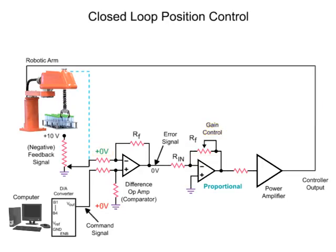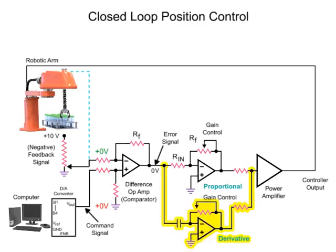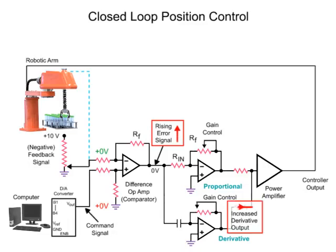To achieve a fast response time and minimize overshoot of the desired position, a derivative amplifier is added to the circuit. The derivative amplifier produces an output while the signal applied to its input is changing. As the arm lags behind the command signal, the error signal causes the derivative amplifier to produce a voltage that adds to the output of the proportional amplifier. The sum of both voltages is applied to the power amp, which results in the robotic arm accelerating at a similar rate to the changing command signal.